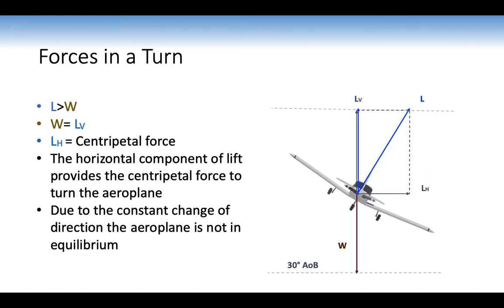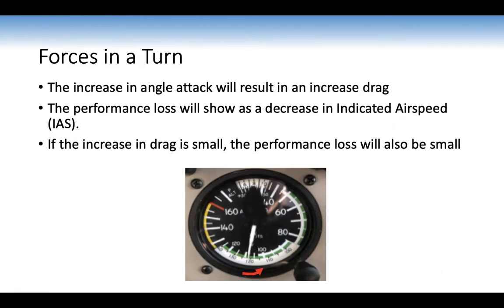In a turn, lift is greater than weight — one of the only manoeuvres where this is true. Weight equals the vertical component of lift, and the horizontal component provides the centripetal force to turn the aeroplane. Due to constant change of direction, the aeroplane is not in equilibrium. The increase in angle of attack results in increased induced drag, showing as a small decrease in indicated airspeed, which we can accept.